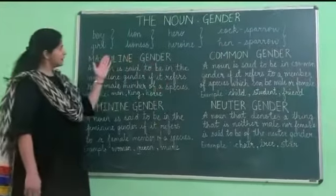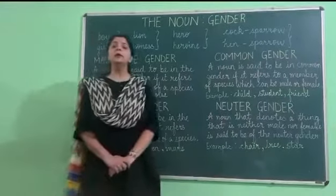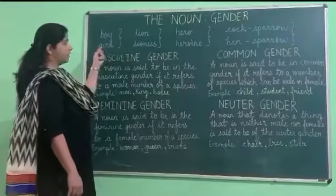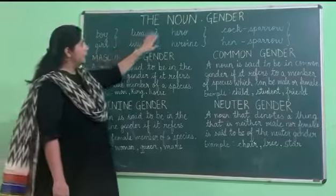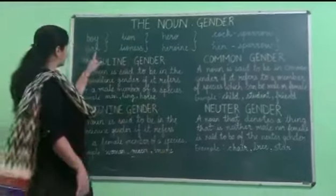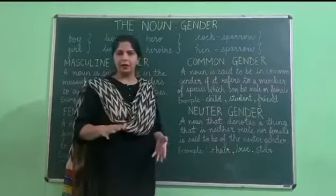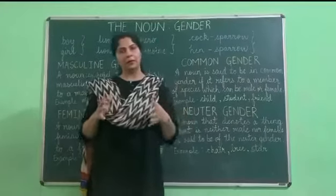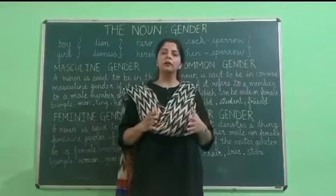If you look at these words carefully, you would realize that the first word is the male species and the second word in the pair is the female species. Boy, Lion, Hero, Cock Sparrow are the male species. Girl, Lioness, Heroine, Hen Sparrow are the female of the species. They are the genders. If you look at living beings, you would realize they are either of the male gender or the female gender.